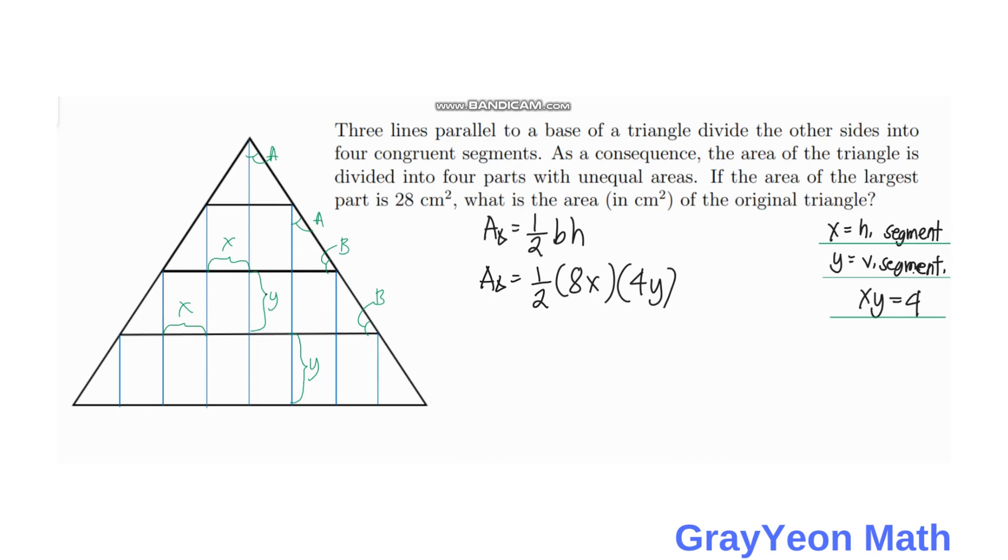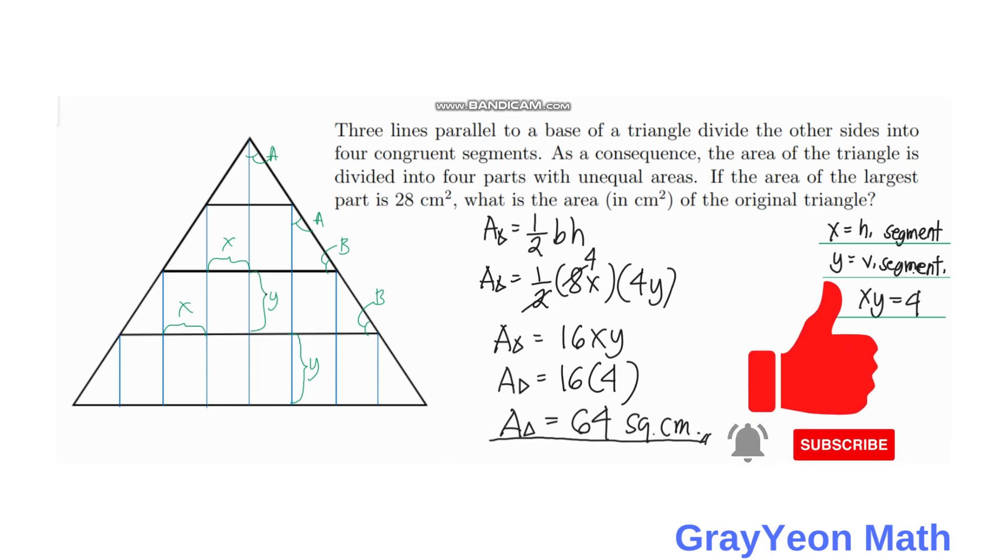Four vertical segments so if we divide this by 2 this becomes 4. That is area of the triangle is equal to 16xy but we know that xy is equal to 4. 16 times 4, so 16 times 4 is equal to 64 so area of the triangle is 64 square centimeters and that is our answer.